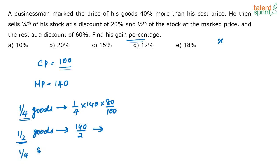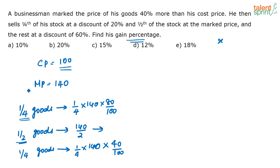He has sold one-fourth and half of the goods, so the remaining one-fourth is left. That remaining one-fourth he is selling at a discount of 60%, meaning he is selling it at 40% of its marked value. So one-fourth of 140, sold at 40% of its value — that gives us the selling price for the last portion.